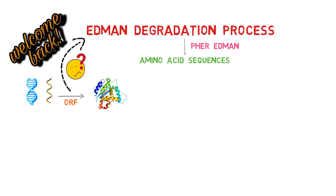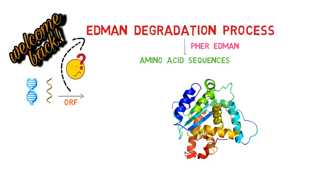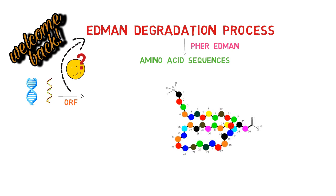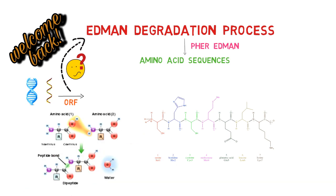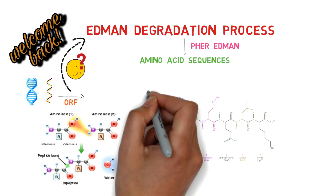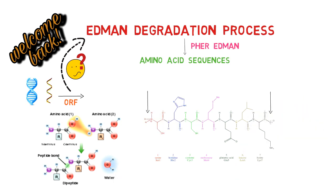Before we start, I would like to refresh your memory on protein structure. Proteins are made up of polypeptide chains, which are in turn composed of amino acids joined by peptide bonds. Different types of amino acids are combined to form a polypeptide. On one end there is a free amino group, and on the other end a free carboxylic group is present. The side with the amino group is referred to as the N-terminal, while the side with the carboxylic group is referred to as the C-terminal.